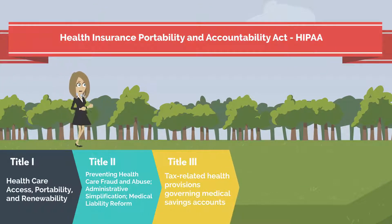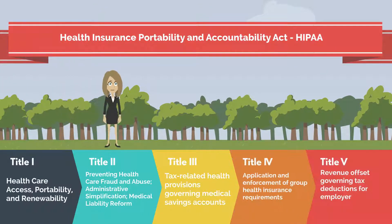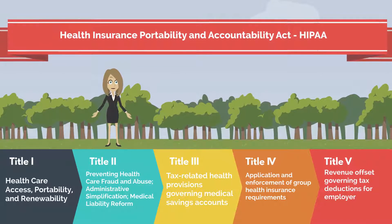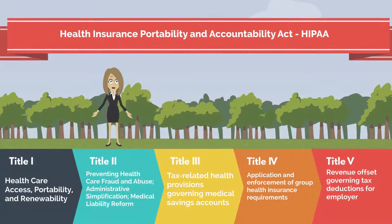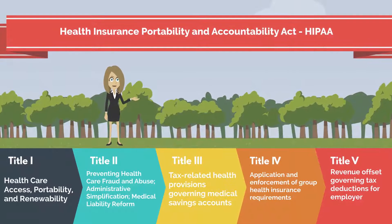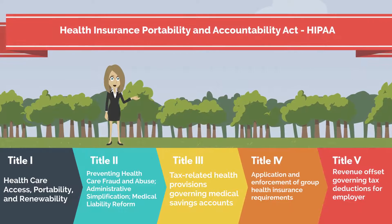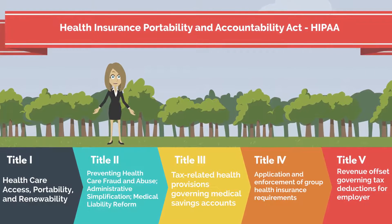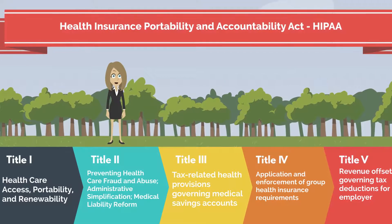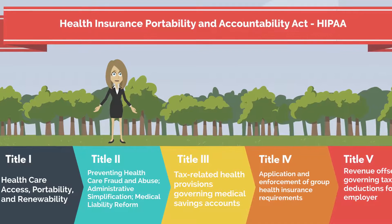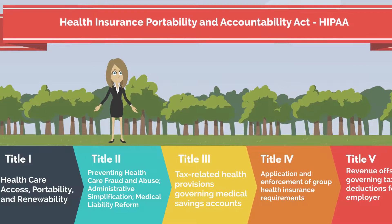For today, we will focus on Title 2. Title 2 requires the Department of Health and Human Services to increase the efficiency of the healthcare system by creating new standards for the use and dissemination of healthcare information.